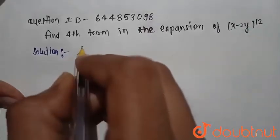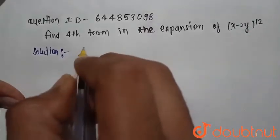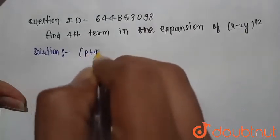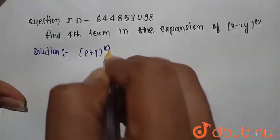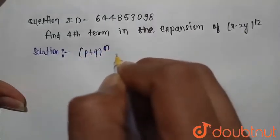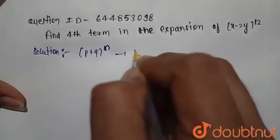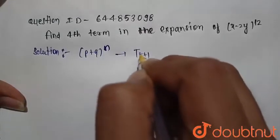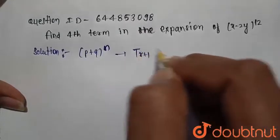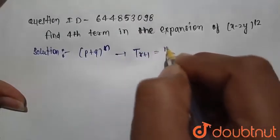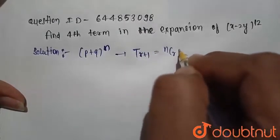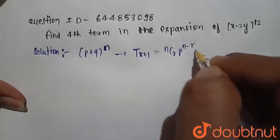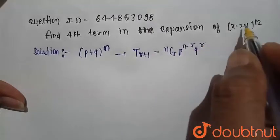First we consider the general binomial expansion, that is (p plus q) raised to power n. The rth term of the expansion is nCr, p raised to power n minus r, and q raised to power r.